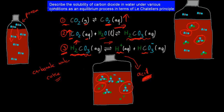The learning objective is to describe the solubility of carbon dioxide in water under various conditions as an equilibrium process in terms of Le Chatelier's principle. We'll cover each of three conditions: change in pressure, change in temperature, and change in concentration.